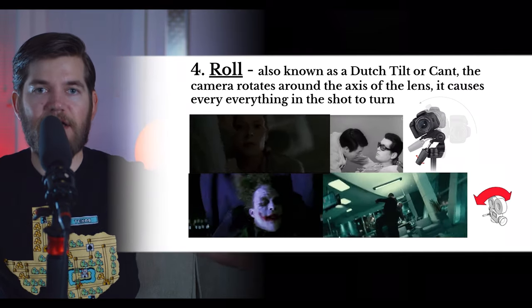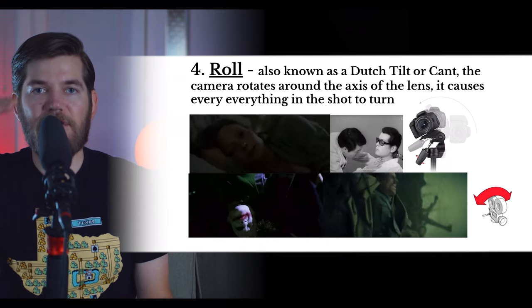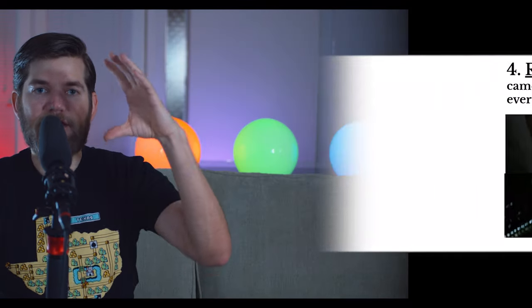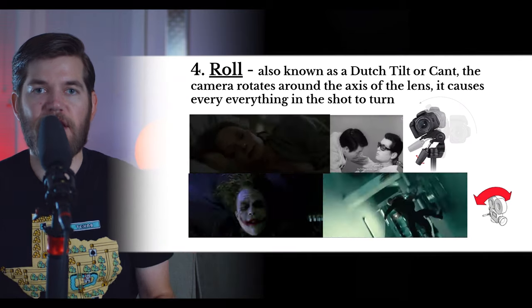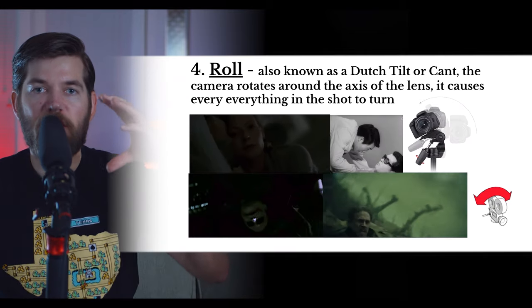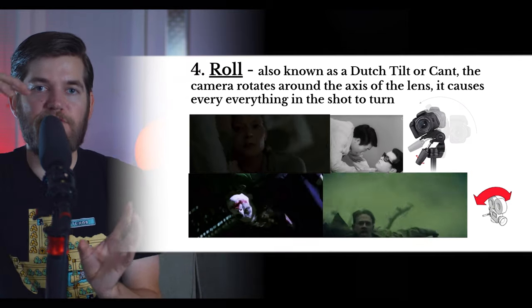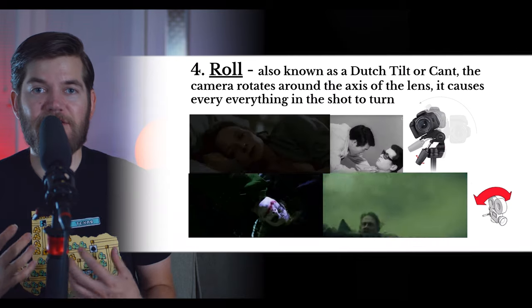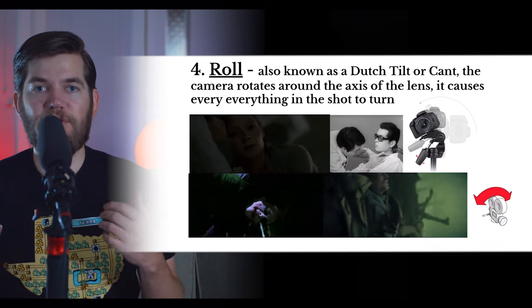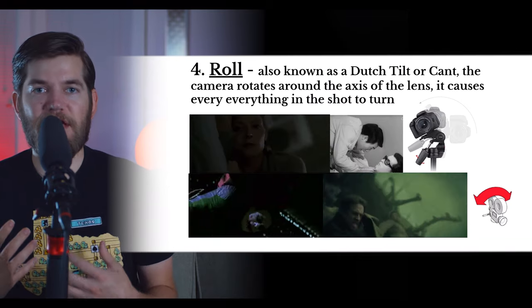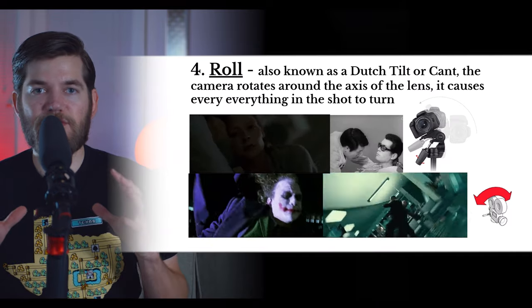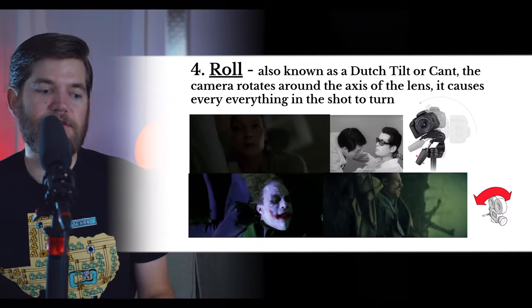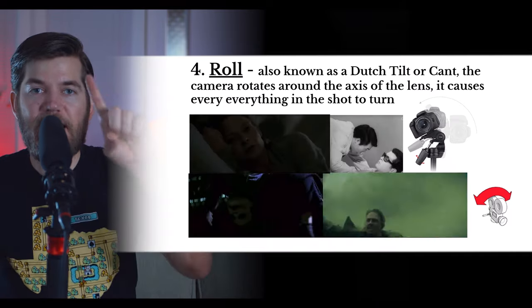When you turn a camera rotating it on the axis of the lens, the vertical and horizontal lines become diagonal lines, creating roll camera movement. Similar to the dutch angle, roll camera movement will create a disorienting, uncomfortable, strange feeling for your audience. It causes everything in the frame to rotate.